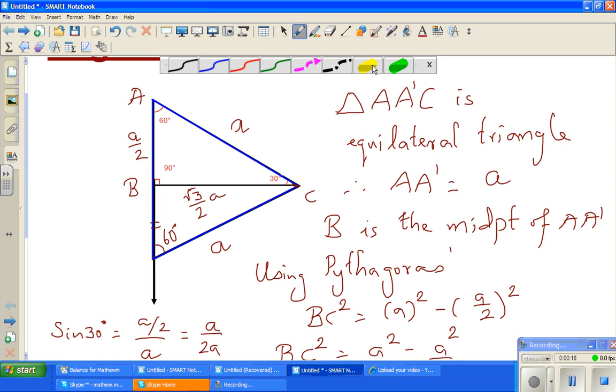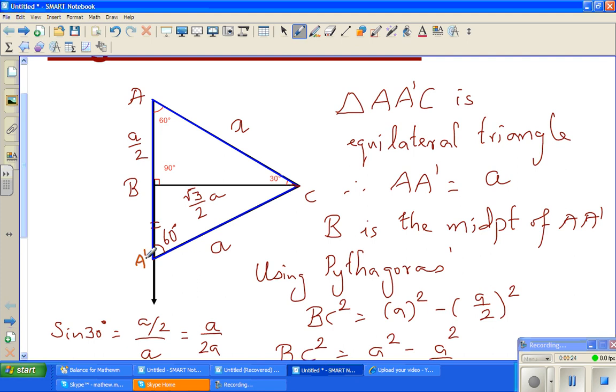So we said that in the right angle triangle we constructed this new triangle, and we see that this is an equilateral triangle, so all the sides are equal. So if this is A, this would also be A and all the sides would become A. So if this is A by 2, this will also be A by 2. So the total length AA dash is A.